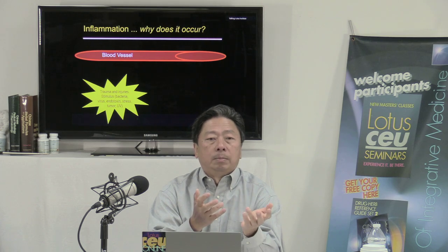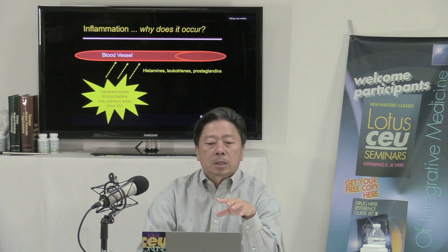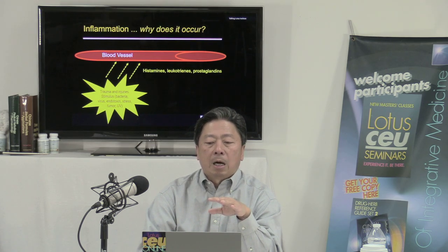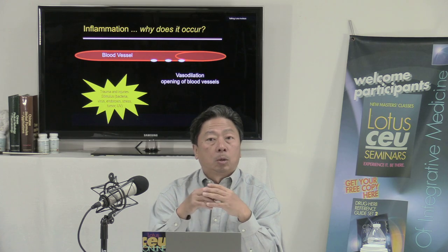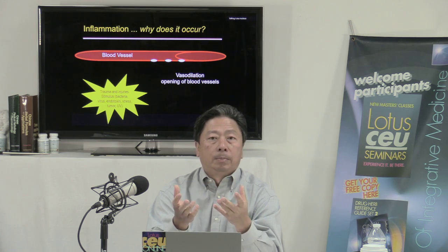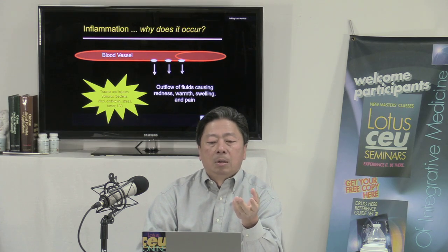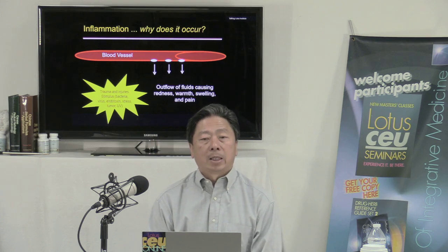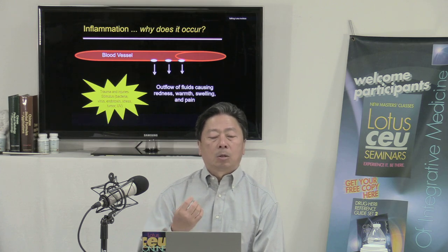The trauma, injury, or stimulus will first cause the body to release substances called histamine, leukotrienes, and prostaglandins. These compounds act on the blood vessels to cause vasodilation — the blood vessels dilate and open pores for cells to come out and take care of the problem. Along with the dilation of the blood vessel, fluid also rushes out to the surrounding tissues, which is when we see swelling and inflammation: localized redness, warm sensation, and swelling.